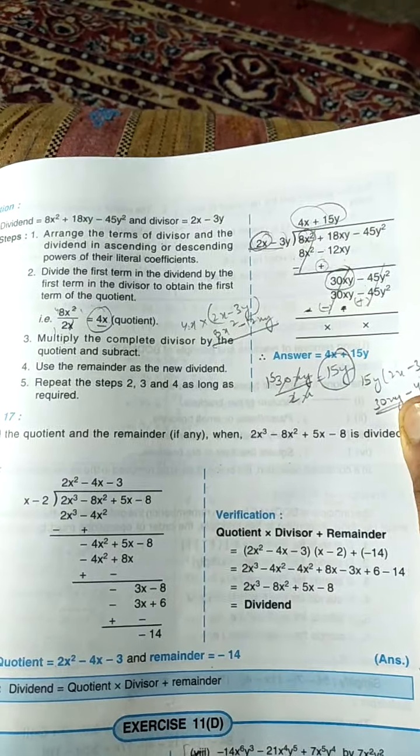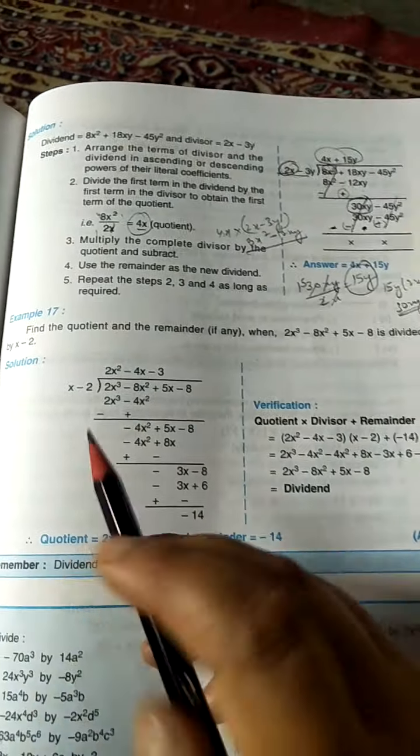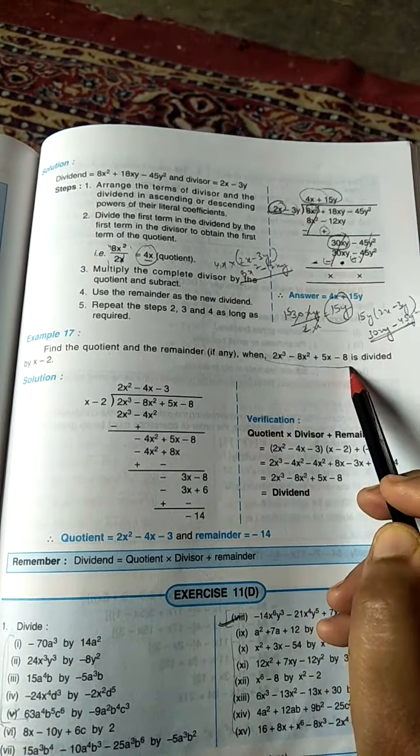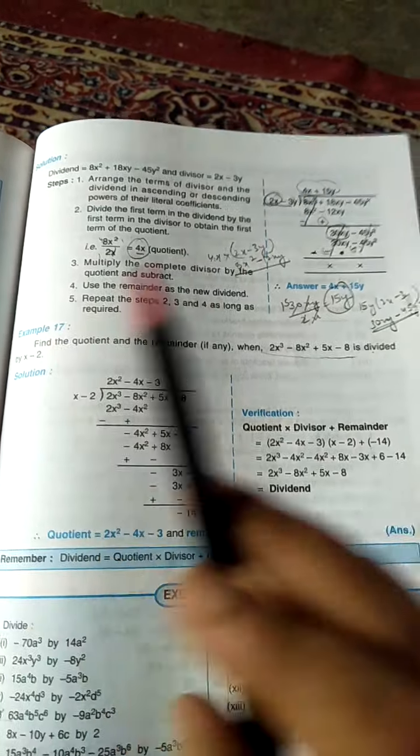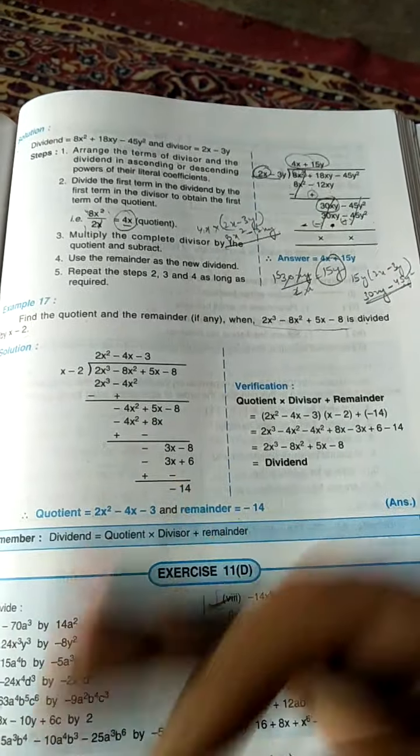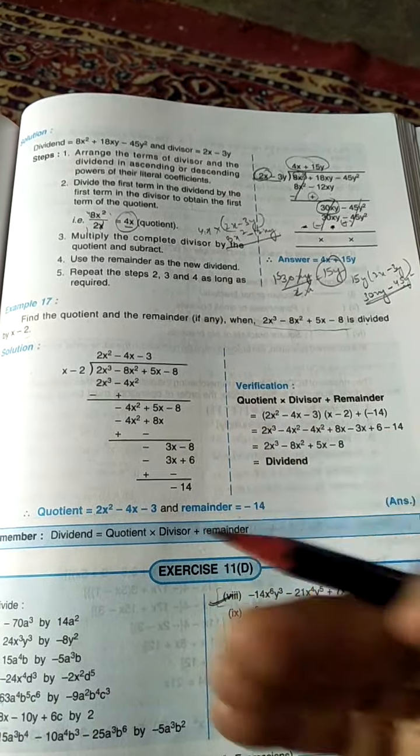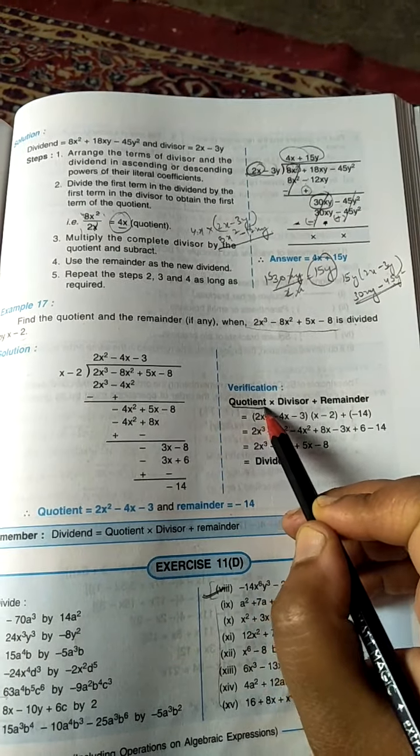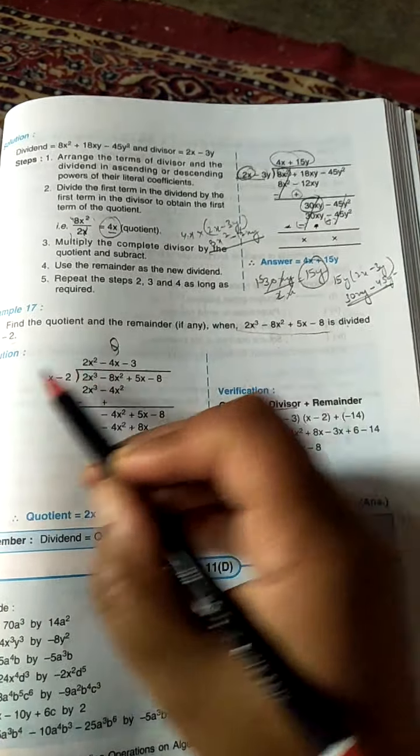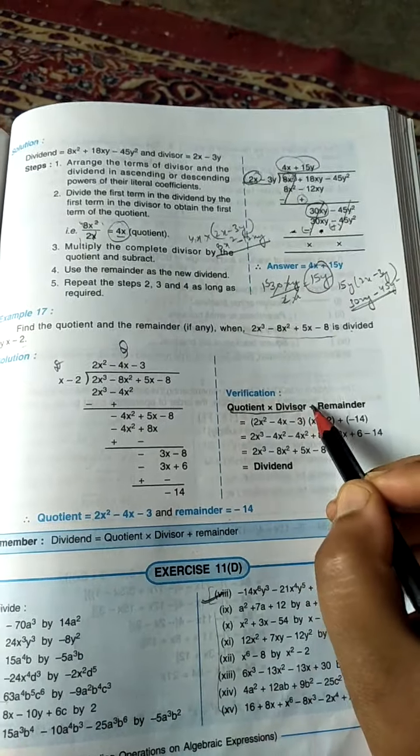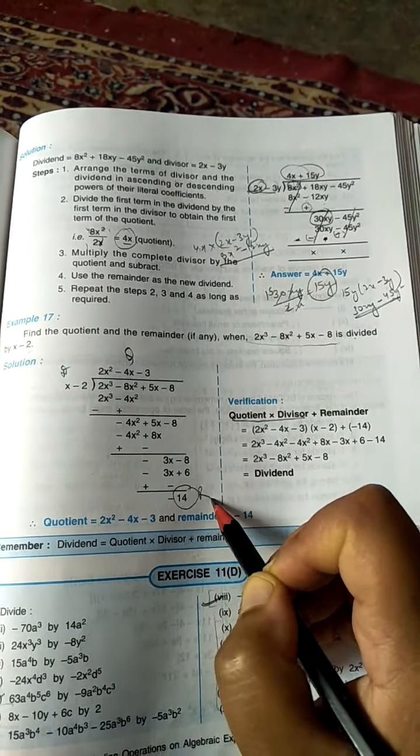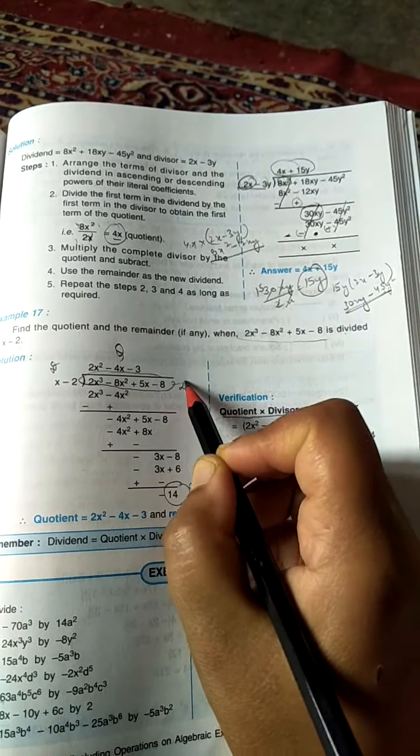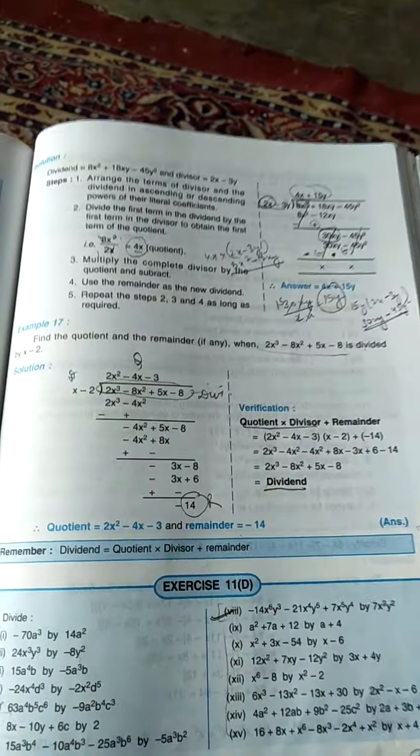I hope this question is clear to you. Also children, find the quotient and remainder if any when this is divided by this. How will you verify whether the answer is correct or not? Children, remember this formula: quotient into divisor plus remainder is equal to what? Dividend. Clear class?